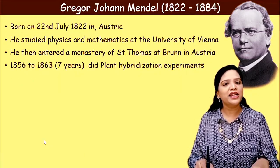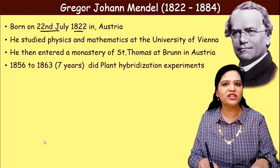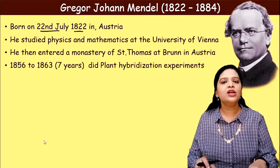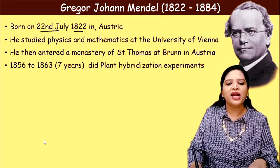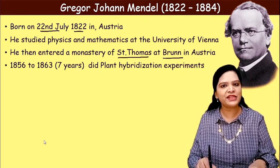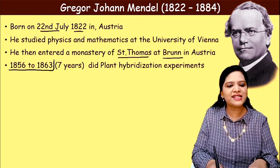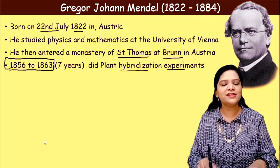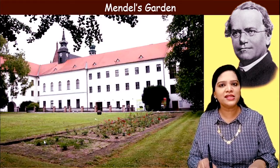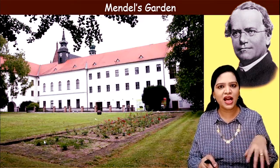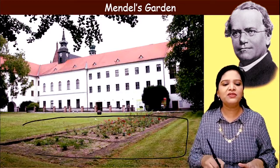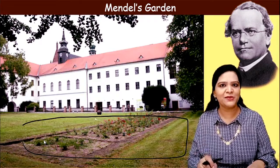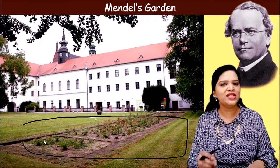Gregor Johan Mendel was born on 22nd July 1822 in Austria. He studied physics and mathematics and belonged to a poor farming family. Unable to continue his studies, he entered the monastery of St. Thomas at Brno in Austria, where he joined as a priest. From 1856 to 1863 — seven important years — he did plant hybridization experiments using pea plants in the garden surrounding the monastery, which was under his care. This place is called Mendel's garden.